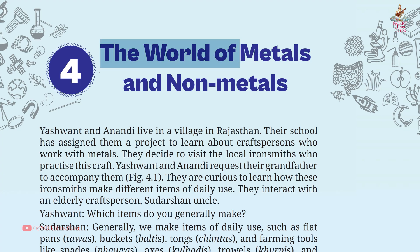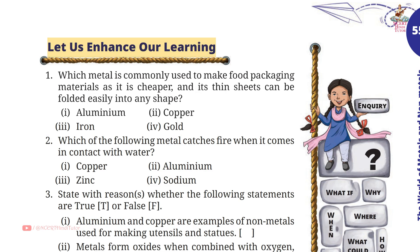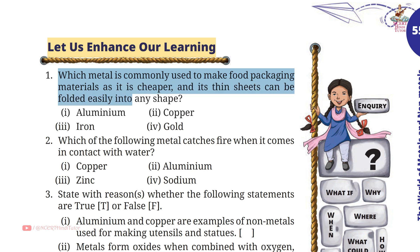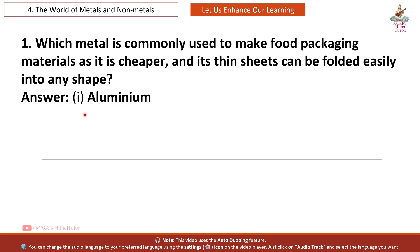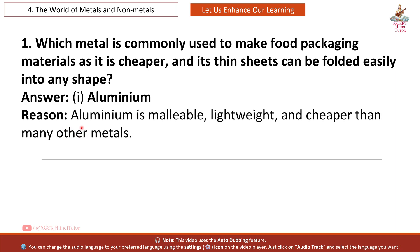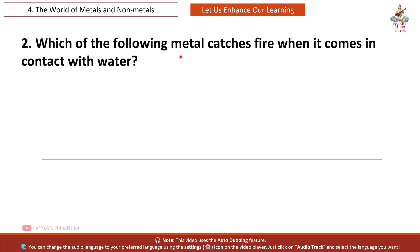Chapter 4: The World of Metals and Non-Metals — Question Answers from Grade 7 Science, Book Curiosity. Question 1: Which metal is commonly used to make food packaging materials as it is cheaper and its thin sheets can be folded easily into any shape? Answer: Aluminium. Aluminium is malleable, lightweight, and cheaper than many other metals.